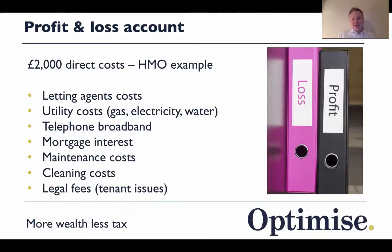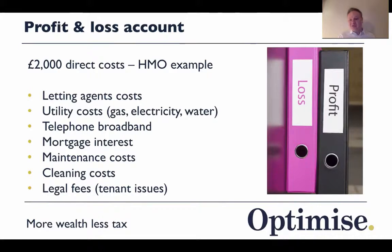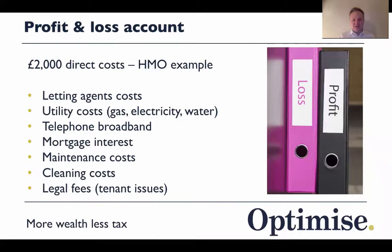Let's take an example of two thousand pounds in direct costs for an HMO. Direct costs are those directly associated with generating income. Letting agent costs are a direct cost of running tenants to generate property income. Utility costs are direct because without utilities you won't have rental income. Telephone and broadband for HMO users are also direct costs, as is mortgage interest — because without that mortgage you wouldn't have rental income.